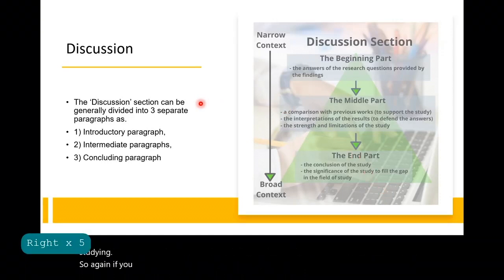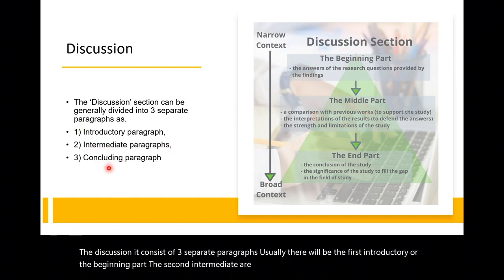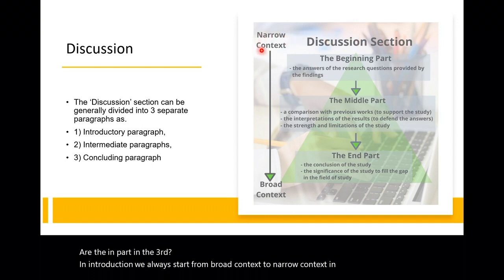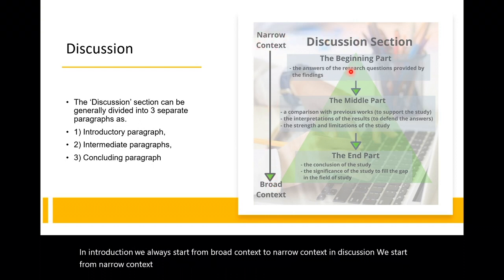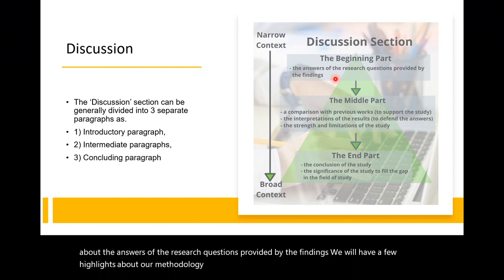If you dissect the discussion, it consists of three separate paragraphs. Usually there will be the first introductory or beginning part, the second intermediate or middle part, and the third concluding or end part. In introduction, we always start from broad context to narrow context. In discussion, we start from narrow context to broad context. So in the beginning part, we usually mention the answers of the research questions provided by the findings. We will have a few highlights about our methodology and about the problem.